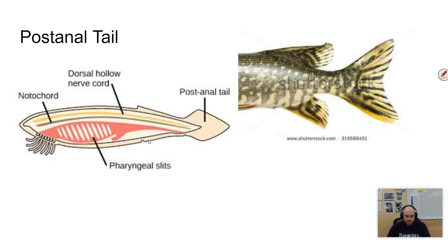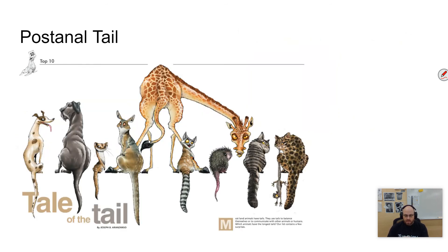Lastly, the post-anal tail. The post-anal tail is added to the body beyond the digestive tract — the anus represents the end of the digestive tract, and the tail is added beyond that. Typically the tail is used for motility, for movement. Not all animals retain their post-anal tail — like us, for instance. Initially it was there for aquatic propulsion, but later it has been used for many different things, or nothing at all. All chordates have a post-anal tail at some point in their development.